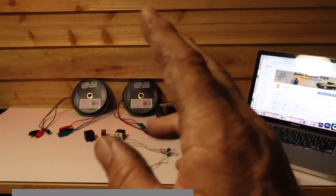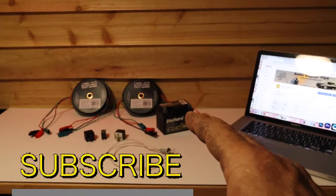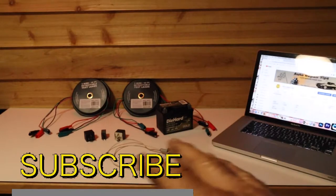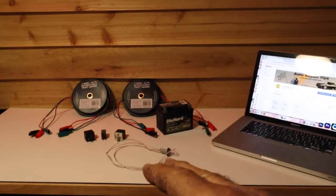What you're going to need to test your relay with are some test leads, a 12-volt battery, and a test light. In this case, I'm using a light socket from a car.